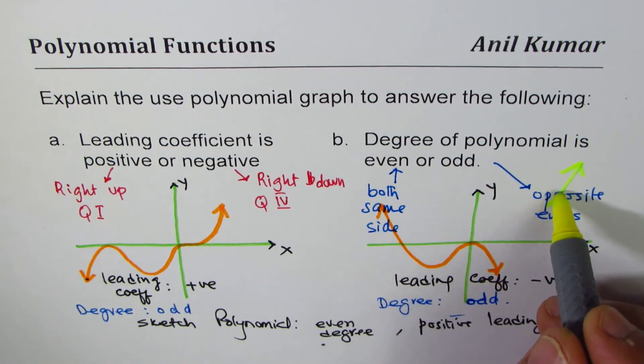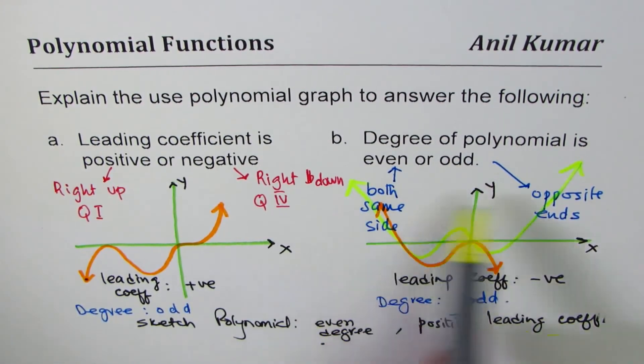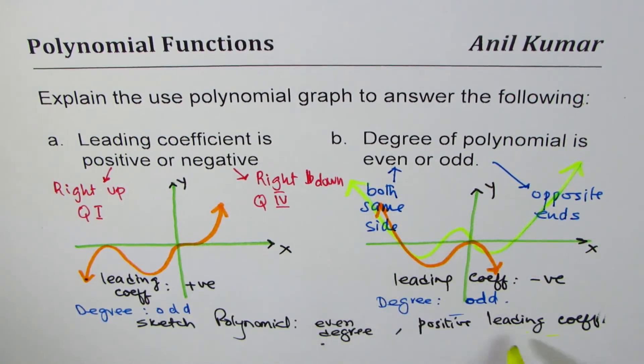So it could be something like this kind of thing, do you see that? So that would be even degree, positive leading coefficient. So that could be an example which has even degree.